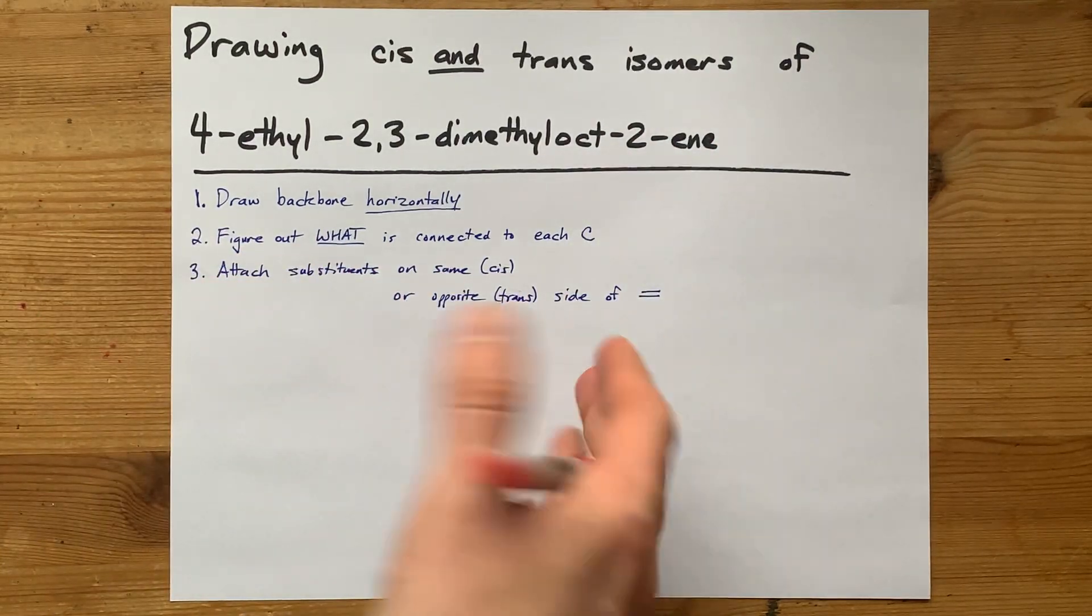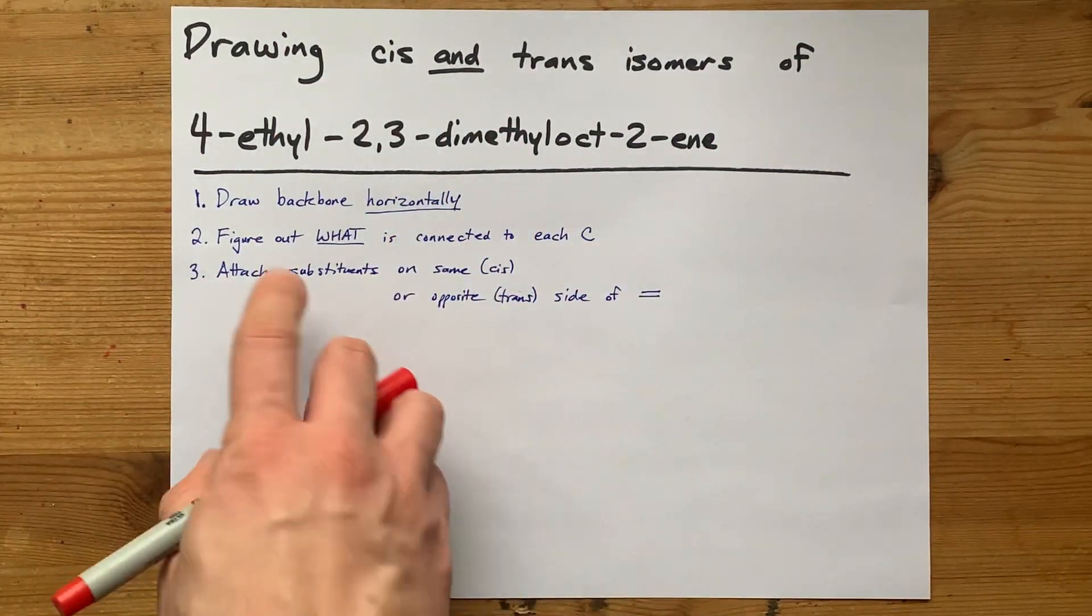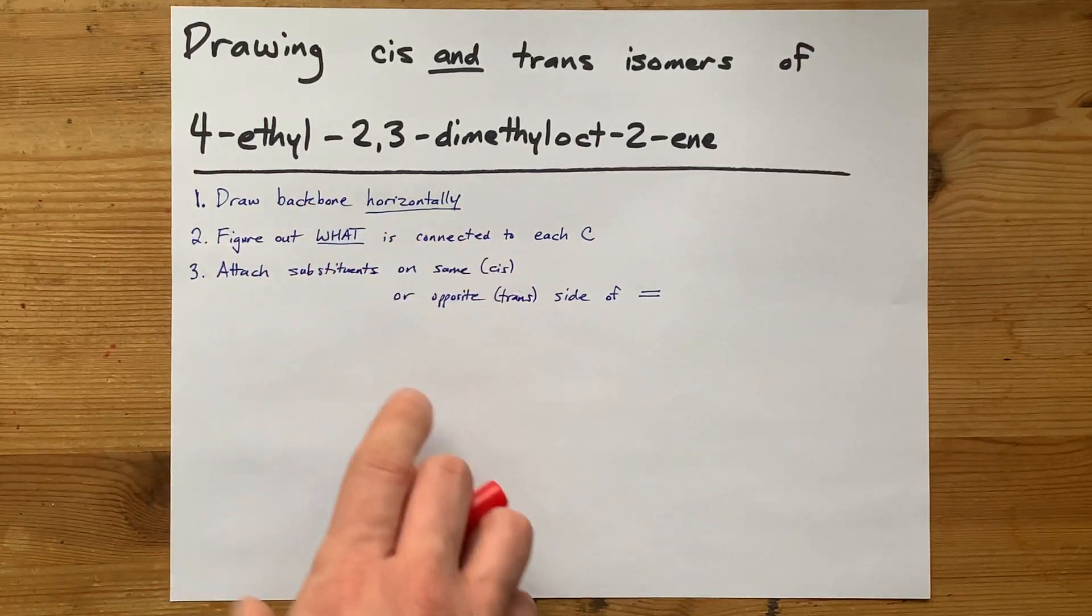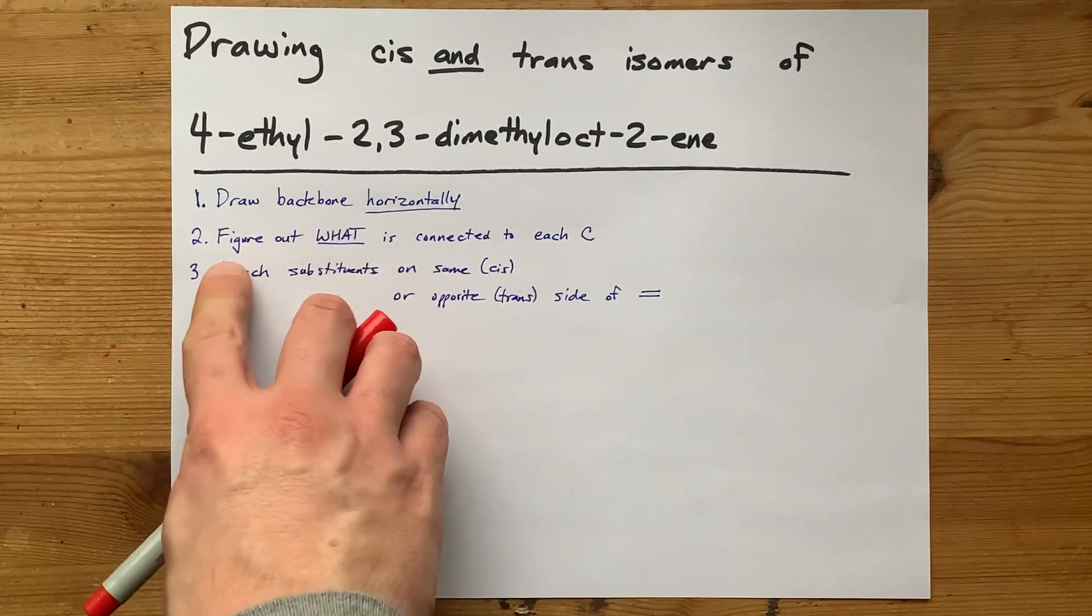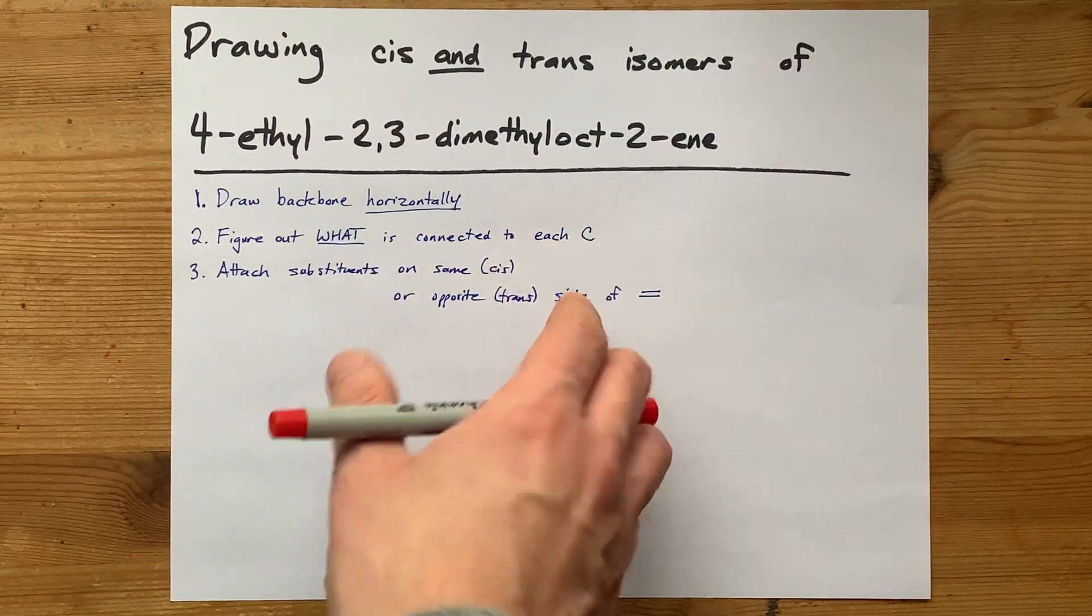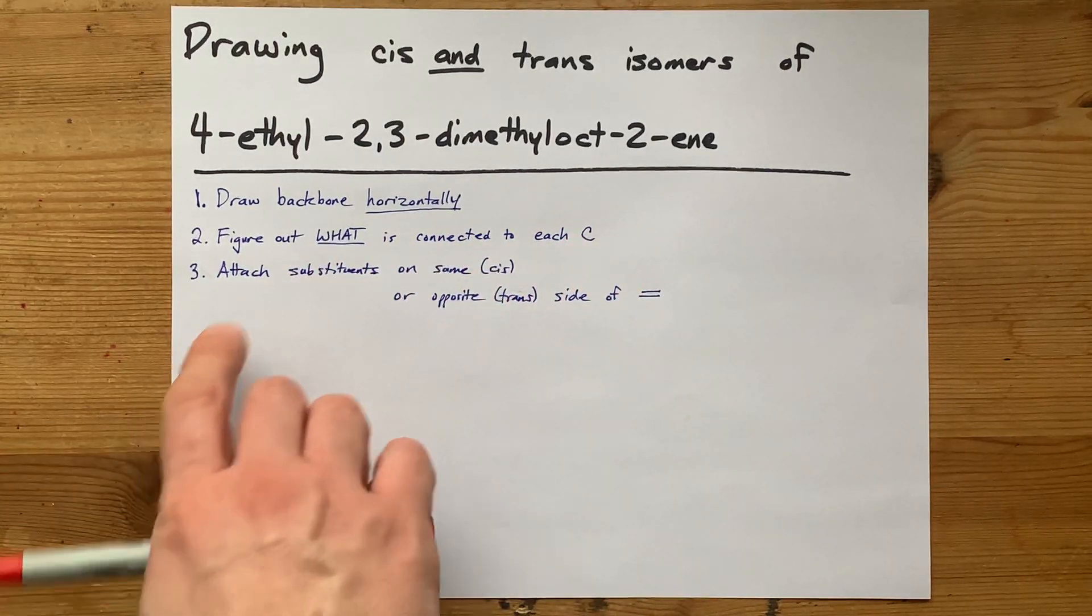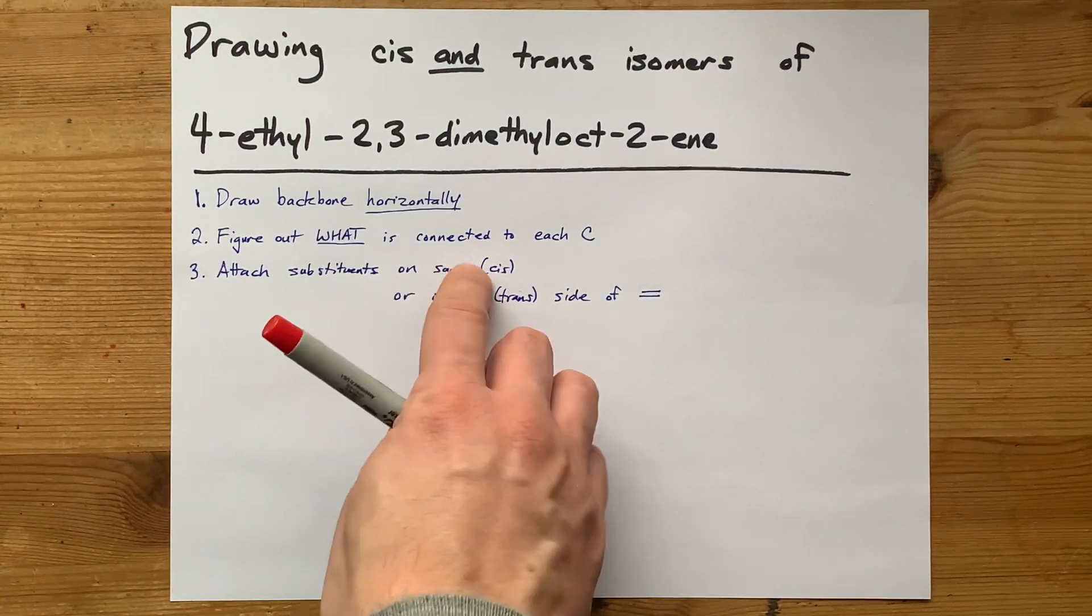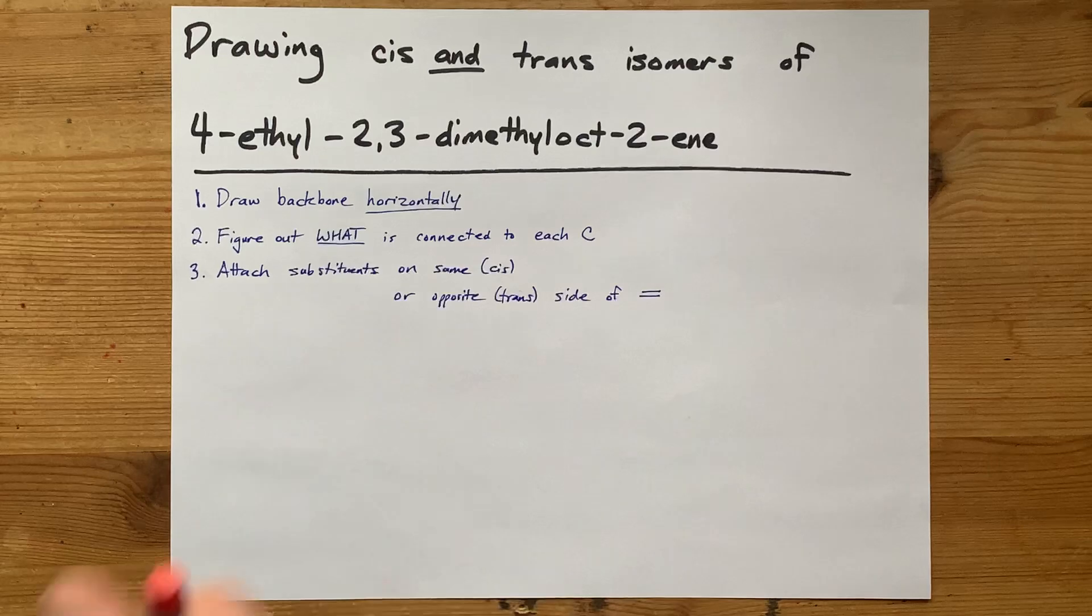The strategy I have for drawing cis and trans isomers is step one, draw the backbone of the molecule horizontally. We're going to then figure out what is connected to each of the carbons, especially around the double bond, and then we're going to attach substituents or hydrogens or whatever on either the same or opposite side of that double bond.